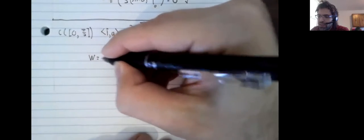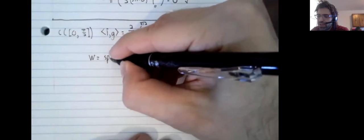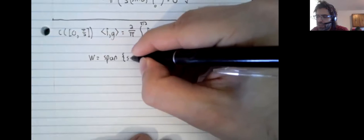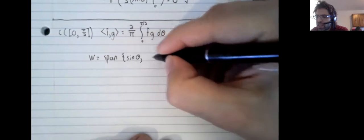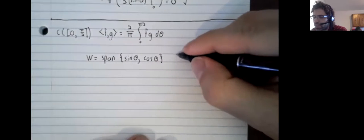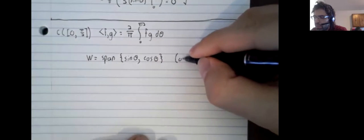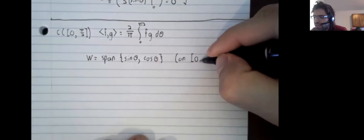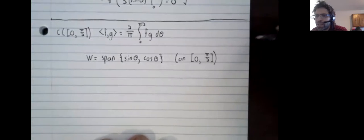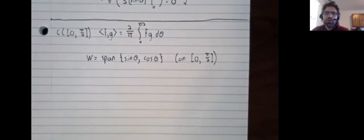This subspace looks the same as the subspace from the previous example. But in the previous example, we were going from zero to pi. Here we're going from zero to pi over two.